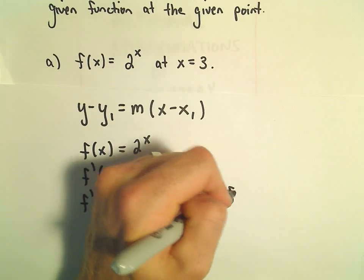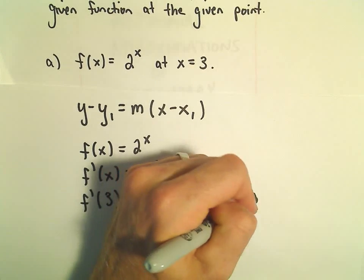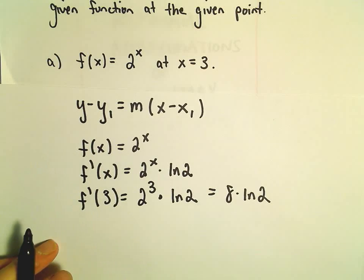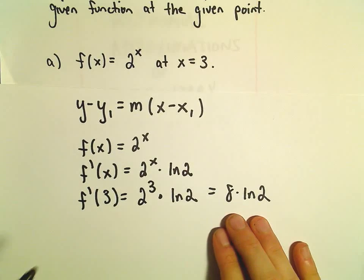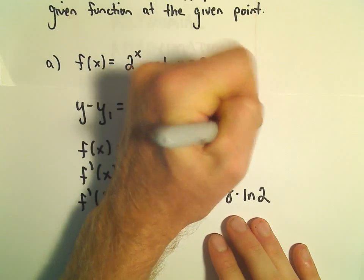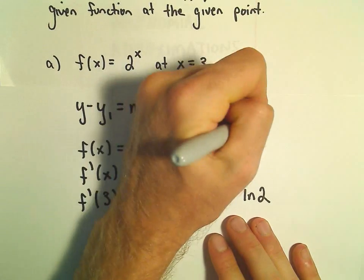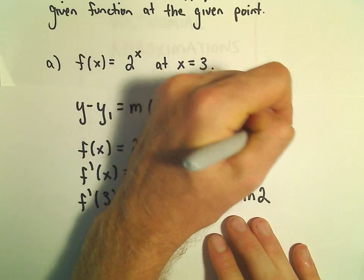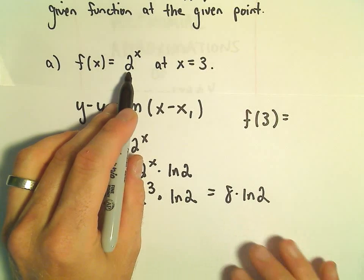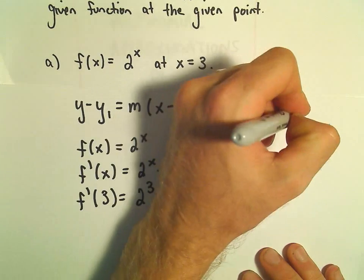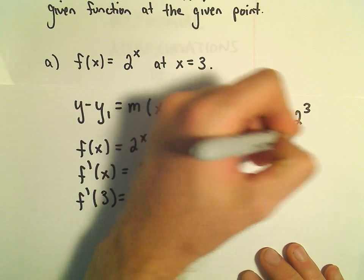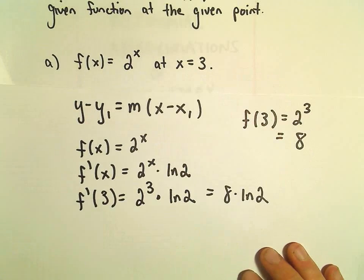2 to the 3rd is 8, so we're left with 8 times the natural logarithm of 2. Notice if we plug 3 into our original function to get the corresponding y-value, we would get 2 to the 3rd, and 2 to the 3rd is just 8.